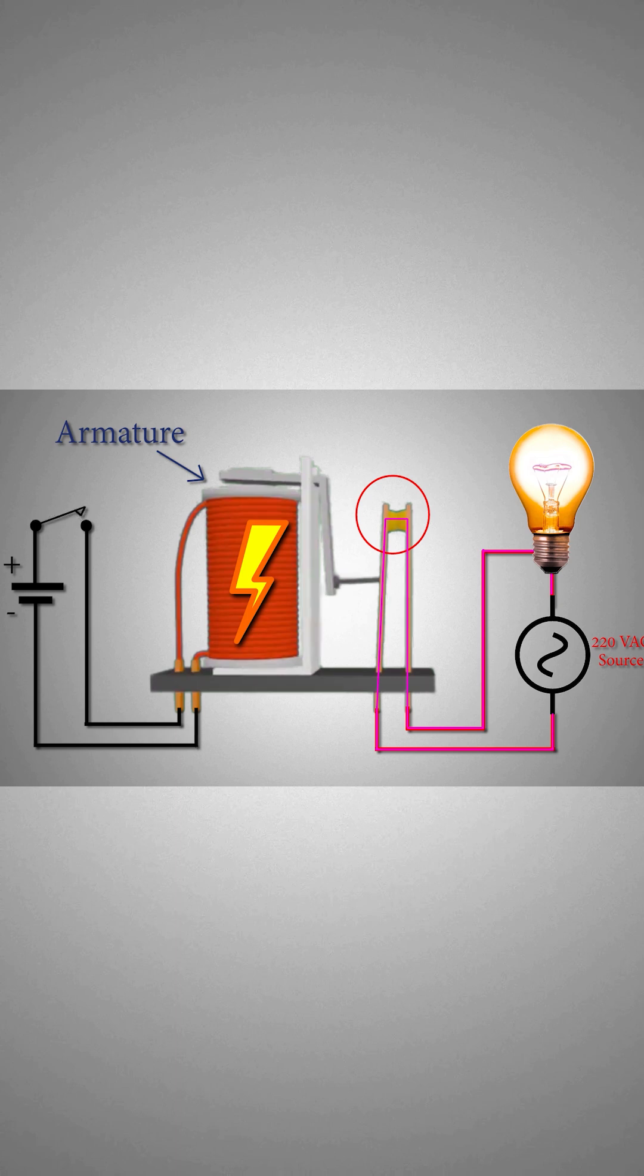When this push button is released, the relay coil gets de-energized and the relay contacts opens up. And it opens the AC circuit and the bulb gets turned off.